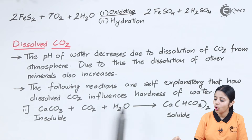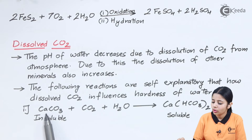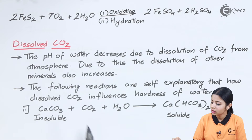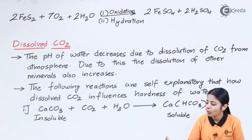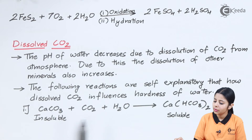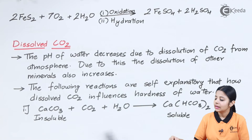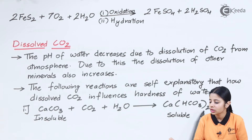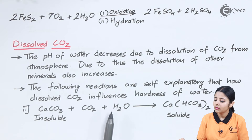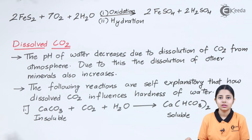Balancing CaCO3 + CO2 + H2O → Ca(HCO3)2: Ca — 1 on each side; C — 1+1 = 2 on reactant, 2 on product; O — O3 + O2 + O1 = 6 on reactant, O3×2 = 6 on product; H — 2 on reactant, H2×2 = 2 on product (from HCO3 twice). The equation is balanced.